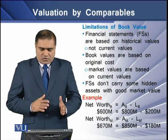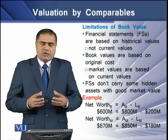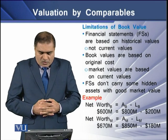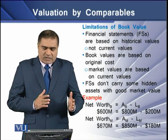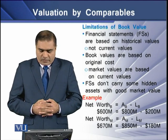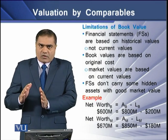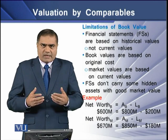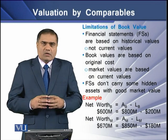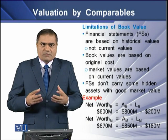Financial statements do not carry some hidden assets with good market value, like goodwill or other intangible assets. For example, consider an entity with assets worth Rs. 800 million and liabilities worth Rs. 200 million as per its accounting records. The net worth of this entity as per the accounting records comes to Rs. 600 million — this is the value derived from the books of accounts.